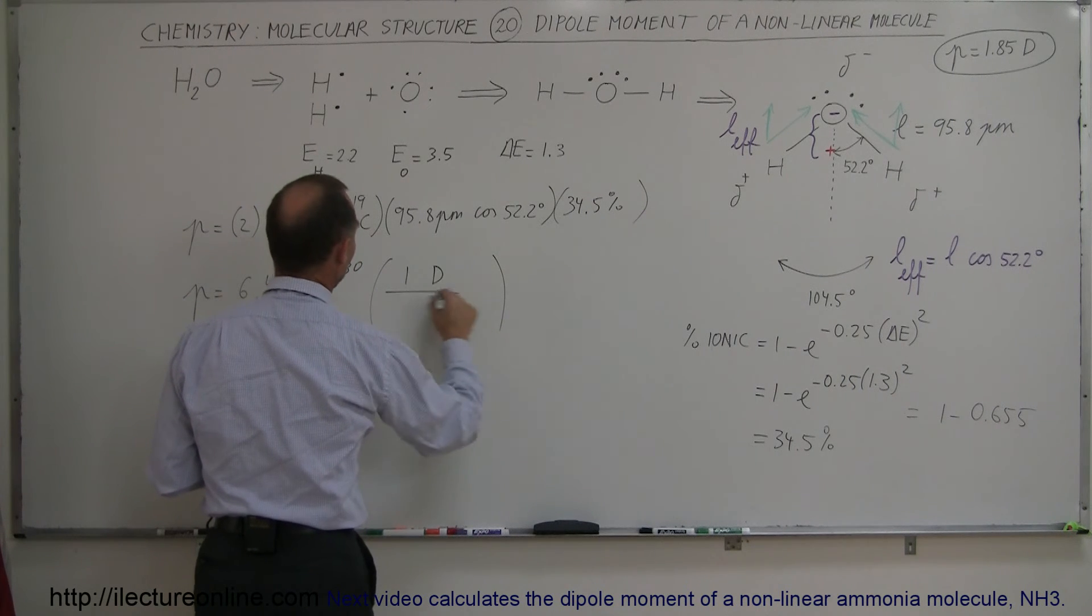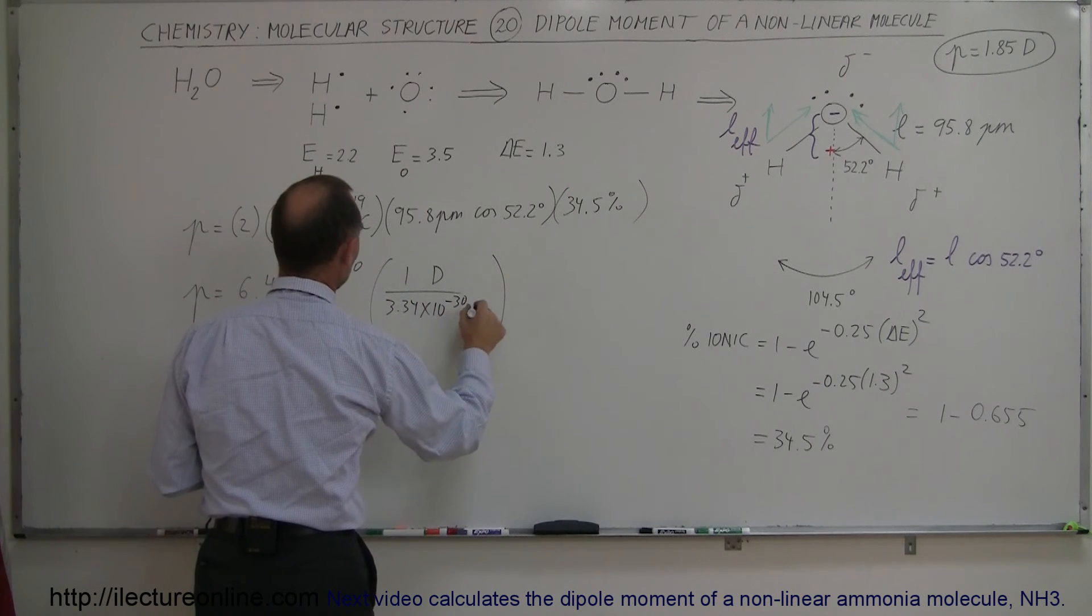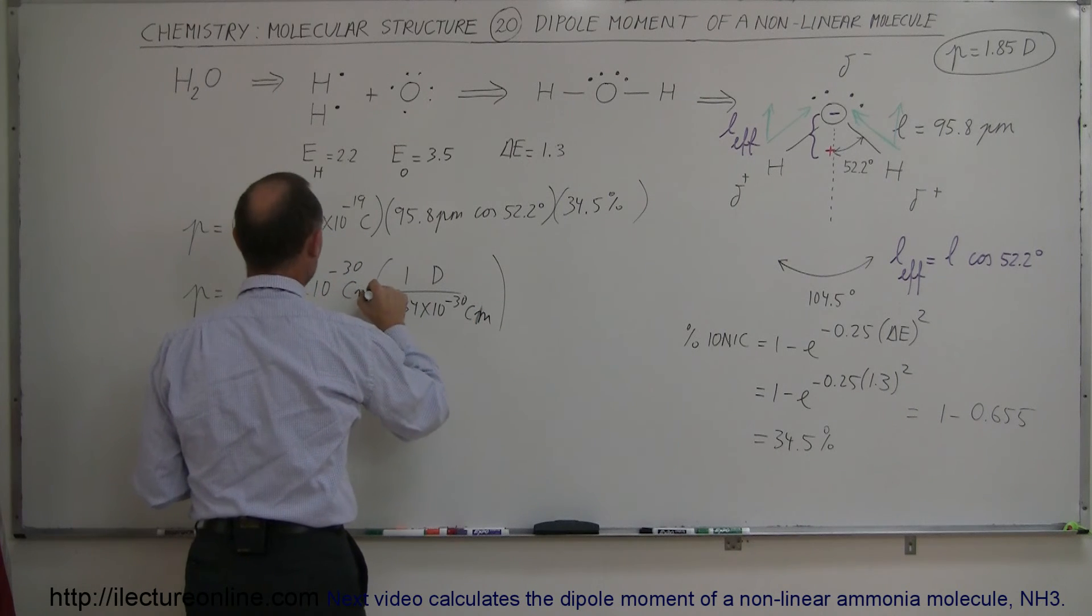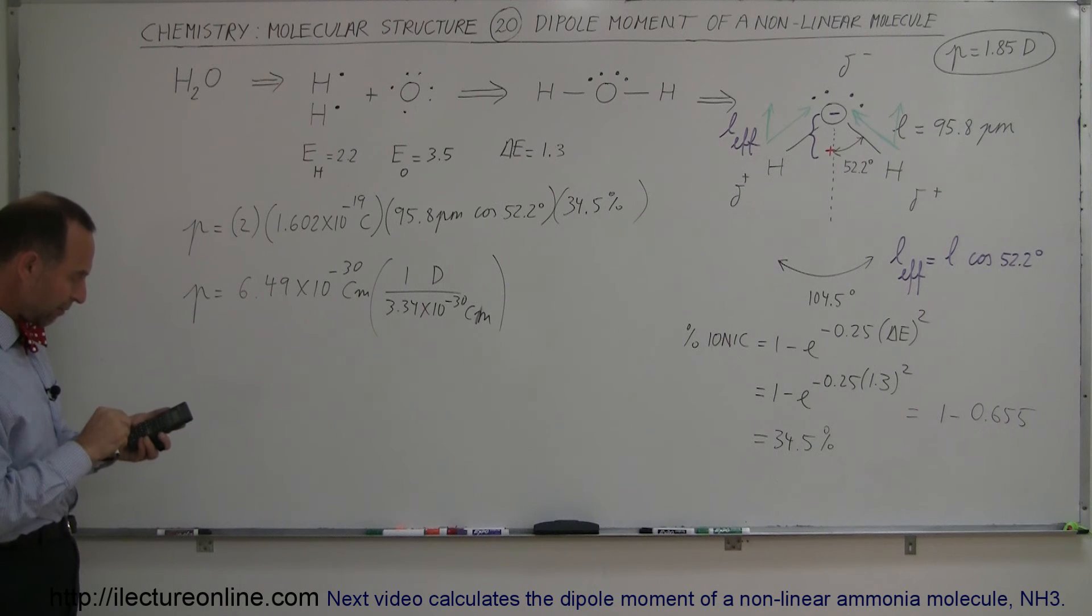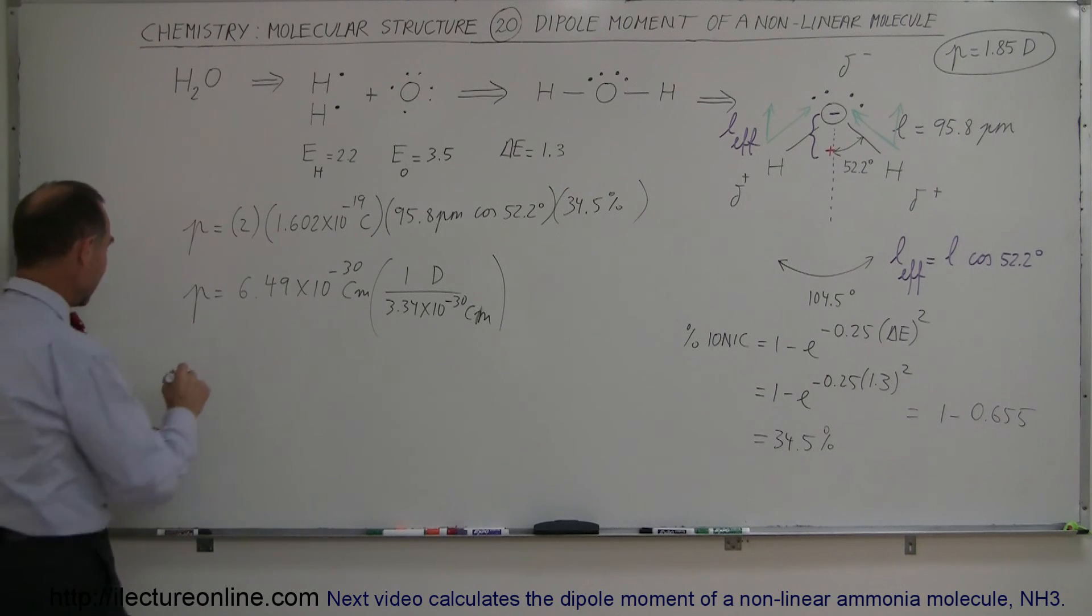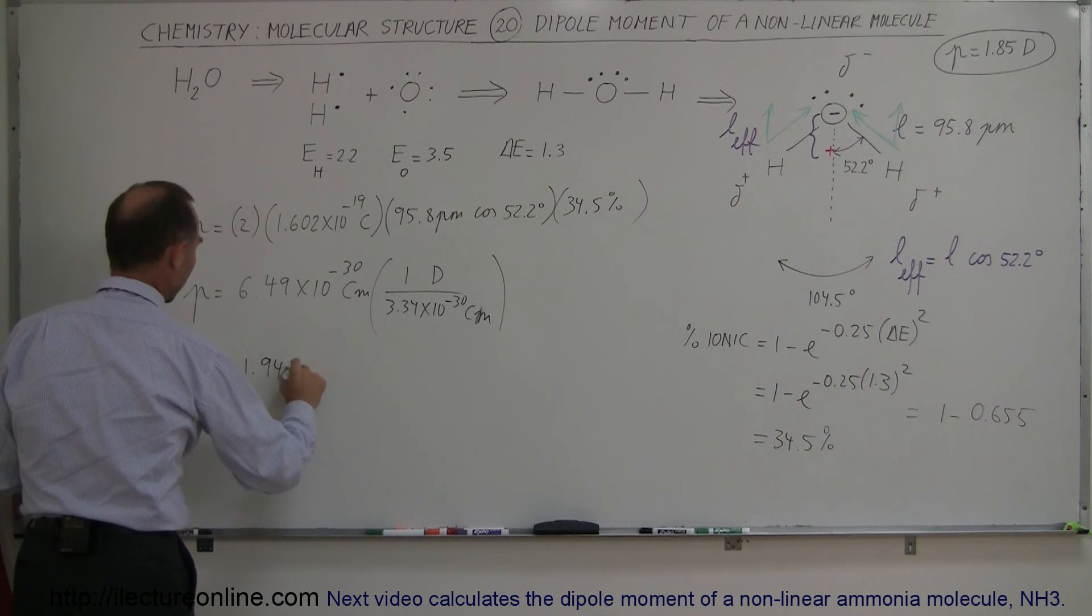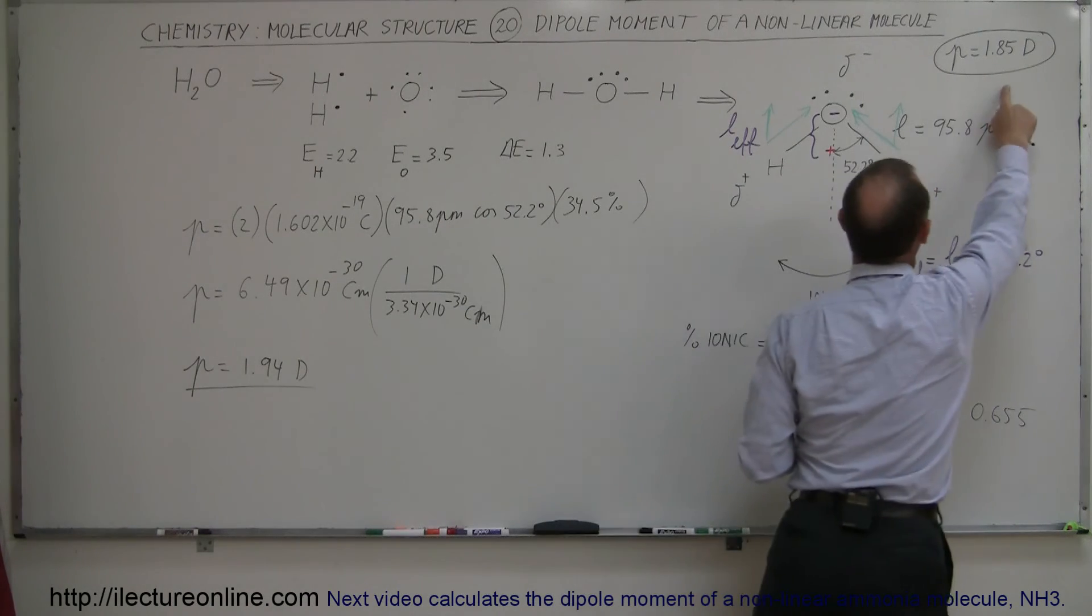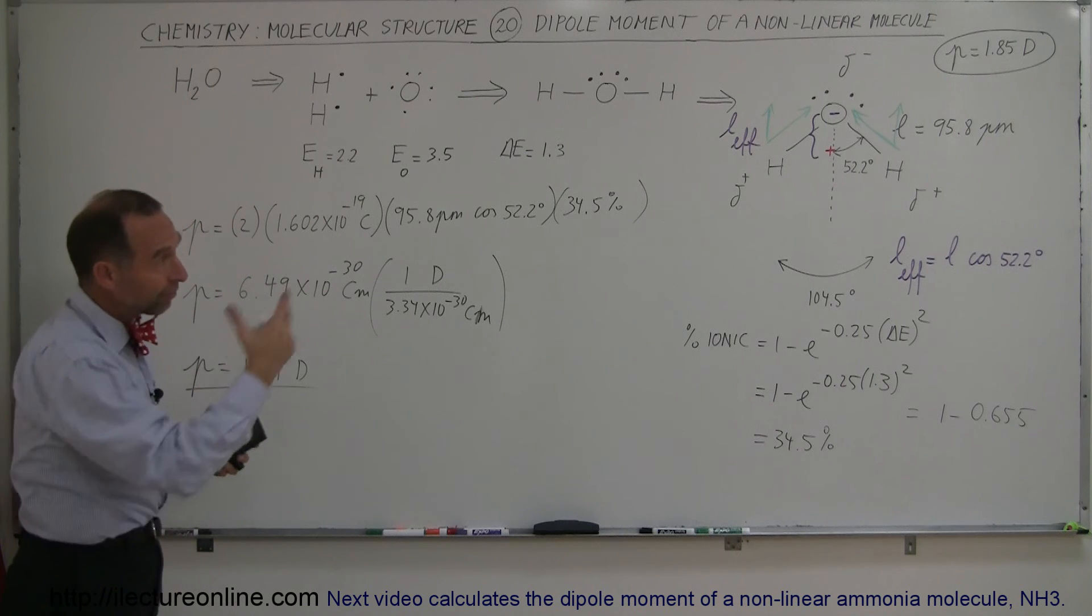So I have 1 debye divided by 3.34 times 10 to the minus 30 coulombs times meters. That should be a small m. This is coulombs times meters. Can't forget the units. So divide by 3.34 e to the minus 30 equals, and I get 1.94 debyes. The experimental value, 1.85. So it looks like I got pretty close to the value I was looking for. That's fairly close.